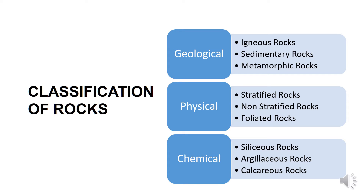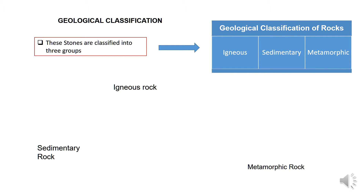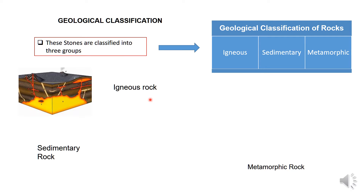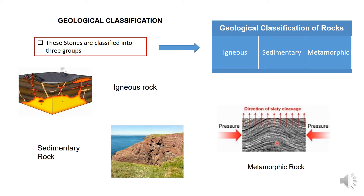Let's see all these types of rocks in detail. First we will deal with geological classification, which is further classified into three types: igneous rocks, sedimentary rocks, and metamorphic rocks. In the images, we can see the sedimentary rock which is formed by the deposition of layers and these rocks are formed near the sea. We can also see the metamorphic rock which is formed by heat and pressure.